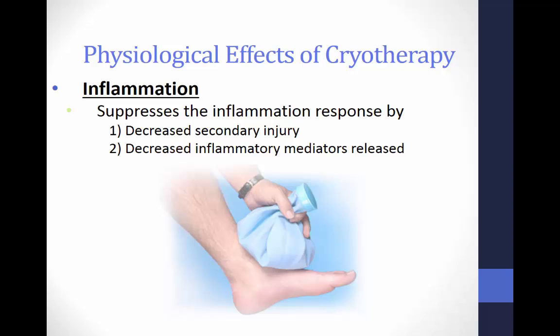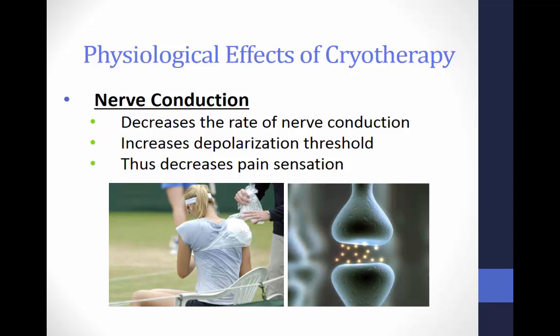Cryotherapy has no effect on the primary traumatic injury — this cannot be prevented. Cryotherapy also has no effect on hemorrhaging that occurs prior to clotting; we can only limit the amount of secondary injury, though we cannot totally eliminate it. Suppressing the release of inflammatory mediators decreases hemorrhage and swelling. Decreasing mechanical pressure on nerves decreases pain. As muscle spasm and edema are reduced, the area is less congested, thus limiting the amount of secondary hypoxic cell death.